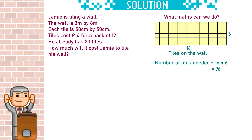Next we need to figure out the number of tiles we will need to buy. He already has 20 tiles, so we just need to take 20 away from 96. So we need 76 tiles — we need to go to the shop and buy 76 tiles.